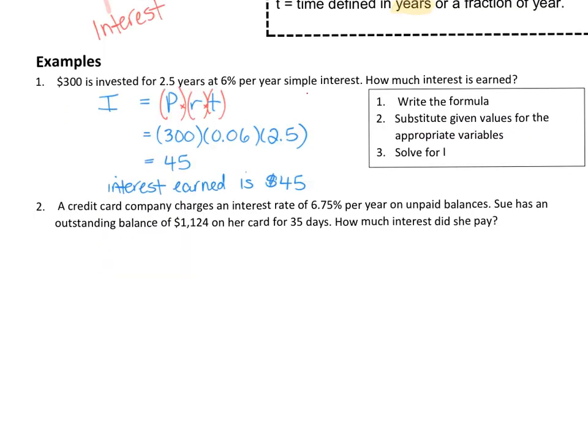Let's try another one. A credit card company charges an interest rate of 6.75% per year on unpaid balances. Sue has an outstanding balance of $1,124 on her card for 35 days. How much interest did she pay? Same thing. Let's go ahead. Our first step is going to be to write out the formula. I equals P times R times T. And let's pause the video. See if you can figure out what goes in all of those places.